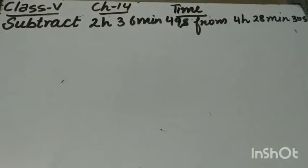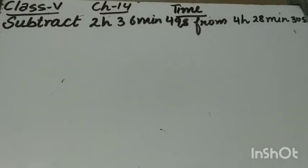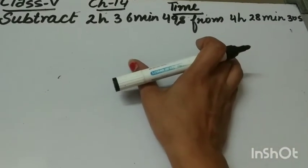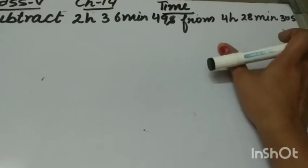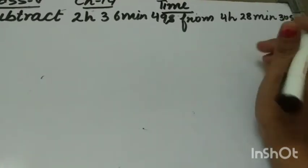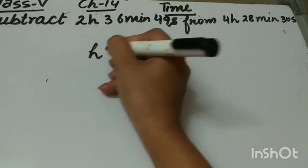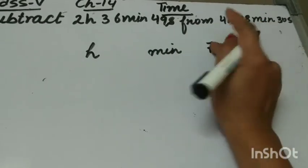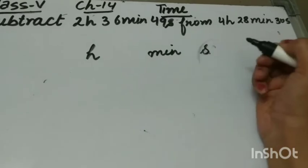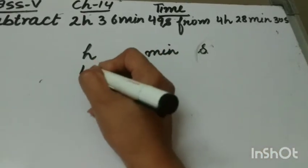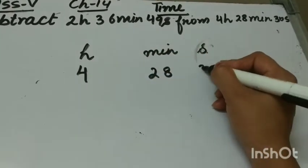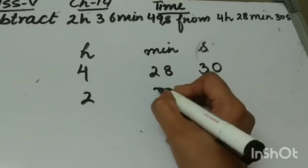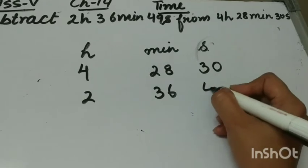Next is how to subtract time. Suppose we have to subtract 2 hours, 36 minutes, 49 seconds from 4 hours, 28 minutes, 30 seconds. First we write hours, minutes and seconds. So it is 4 hours, 28 minutes and 30 seconds minus 2 hours, 36 minutes and 49 seconds.